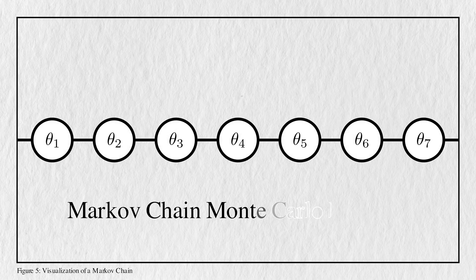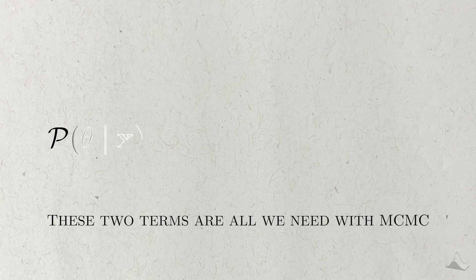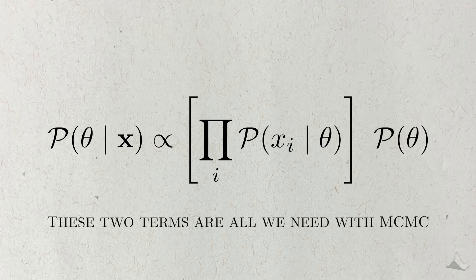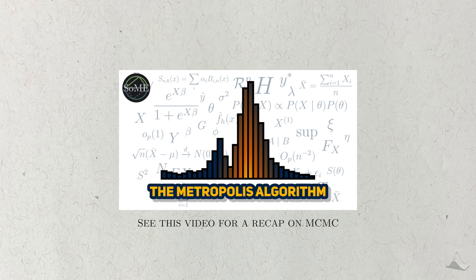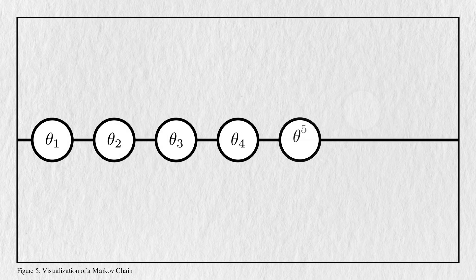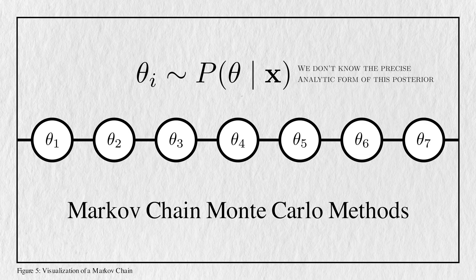Another way we can get the posterior distribution is to use Markov Chain Monte Carlo, or MCMC methods. MCMC enables us to sample from the posterior distribution without calculating that pesky denominator. We only need to specify the likelihood and the prior distribution. I explained the basic concept behind MCMC algorithms in my Metropolis video, so watch that if you're interested in learning more. In a nutshell, MCMC algorithms generate a sample whose distribution is the posterior distribution. While we may not know the exact analytic form of the posterior, having a sample from it is just as good.